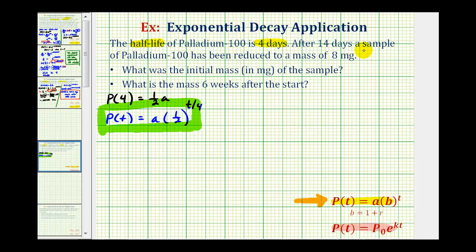Next, we're told that after 14 days, a sample of palladium-100 has been reduced to a mass of eight milligrams. So they're telling us that when t equals 14, or 14 days, P of 14, the amount remaining, is equal to eight milligrams. Our job is to determine the initial mass, or the value of a.